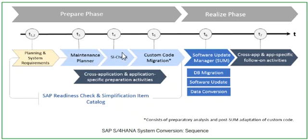In the SI check, we verify the simplification items which are relevant for the conversion. In the custom code migration phase, we check the code which is suitable for S4HANA. If there are any changes to be made, the developers make those changes and get the system ready for the ERP conversion.